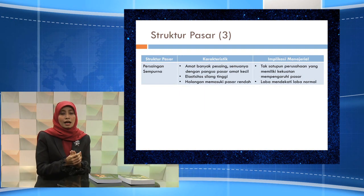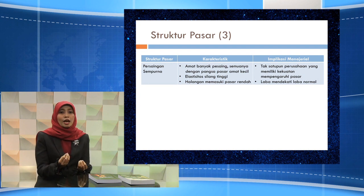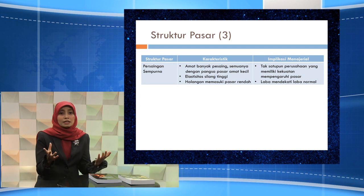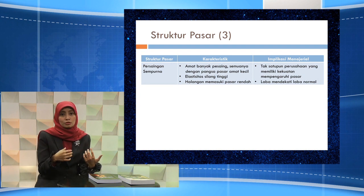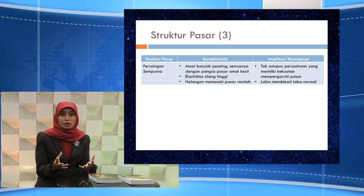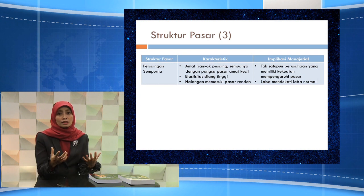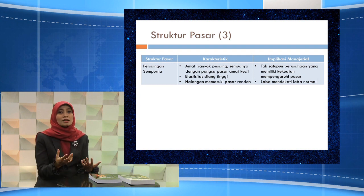Yang kelima adalah pasar persaingan sempurna. Karakteristiknya: pesaingnya banyak, semuanya memiliki pangsa pasar yang kecil, elastisitas silang produk antar perusahaan itu tinggi, dan halangan perusahaan baru untuk masuk ke pasar rendah. Dampaknya, tidak ada satu perusahaan pun yang memiliki kekuatan penuh untuk mempengaruhi pasar, dan mereka yang masuk ke dalam struktur pasar ini biasanya memiliki laba yang hanya mendekati laba normal.